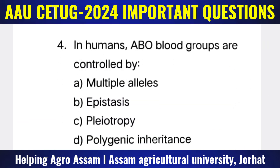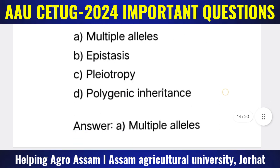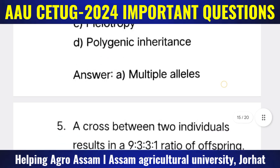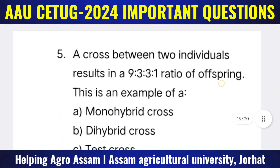Question 4: In humans, ABO blood groups are controlled by — Options: (A) Multiple alleles, (B) Epistasis, (C) Pleiotropy, (D) Polygenic inheritance. The correct answer is option A — multiple alleles.